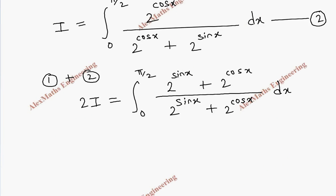We can cancel both the terms 2^(sin x) plus 2^(cos x) in the numerator and denominator. The integral of dx is x and we have the limit 0 to π/2.